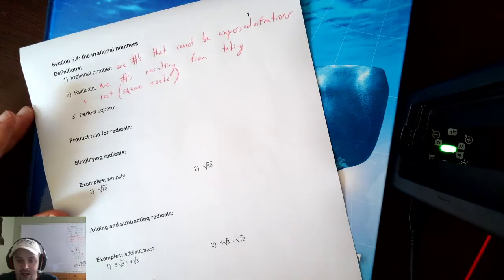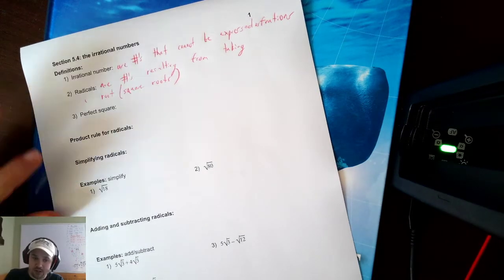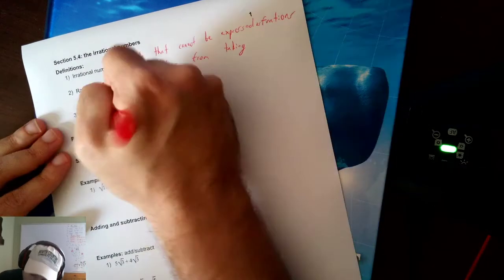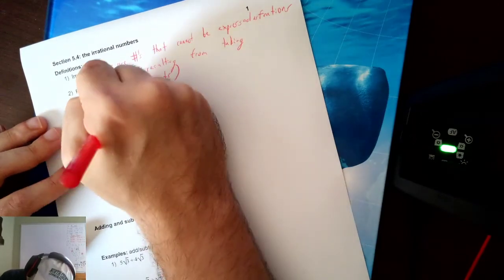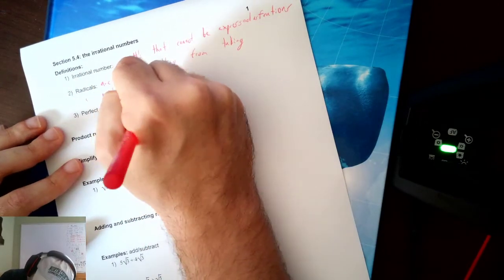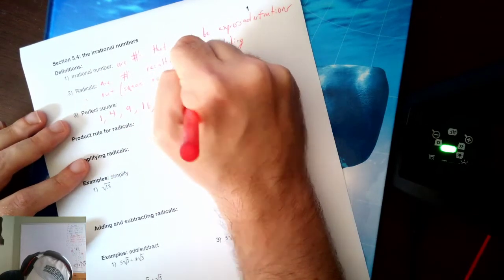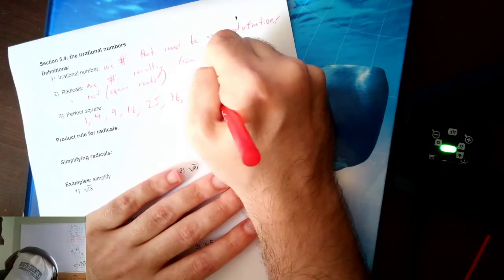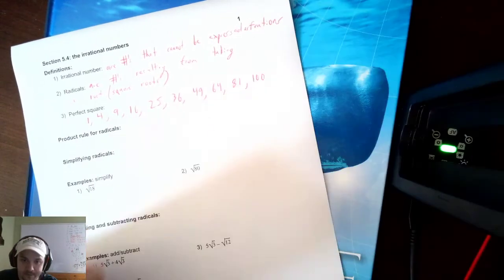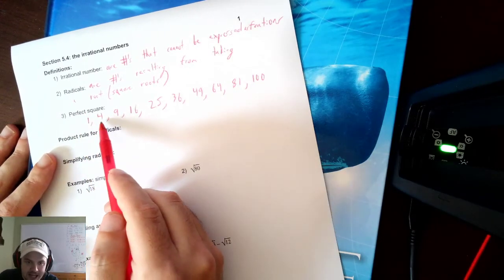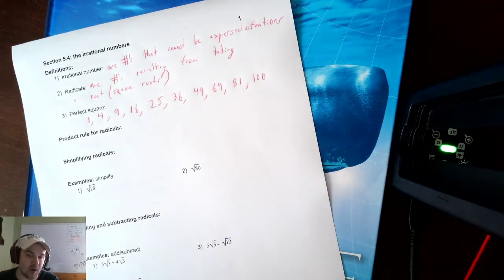We're also going to talk about perfect squares. Perfect squares are numbers that have square roots. Let's write the first 10, because that will help us. They are 1, 4, 9, 16, 25, 36, 49, 64, 81, and 100. That's 1×1, 2×2, 3×3, 4×4, and so on. These are the perfect squares.